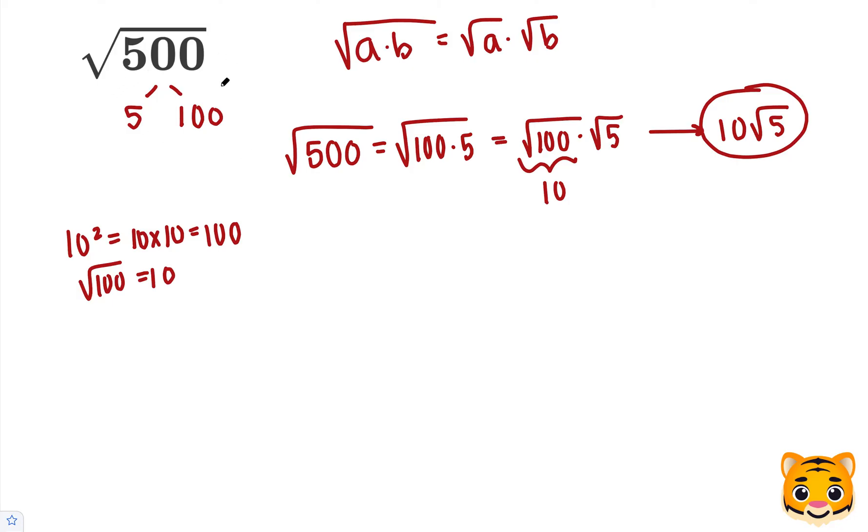Now to estimate the square root of 500, we want to take a look at perfect squares nearby to 500. 22 squared is equal to 484 and 23 squared is equal to 529. So we can see that 500 is between 22 squared and 23 squared.